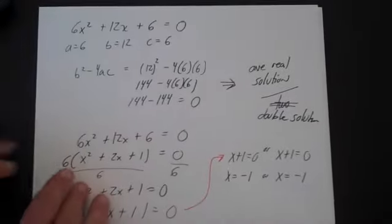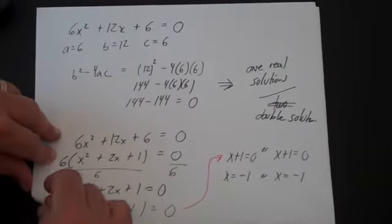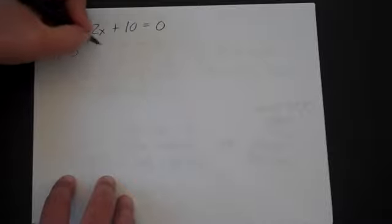Let's do one more example of finding the discriminant and finding out how many real solutions there are. Let's do 3x squared plus 2x plus 10 is equal to zero. So a is 3 and b is 2 and c is 10.